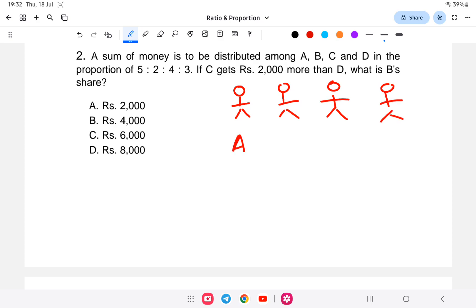For example, A, B, C, D, the money is distributed in the ratio 5:2:4:3. The given condition is that C gets 2000 more than D. So we need to find B's share.